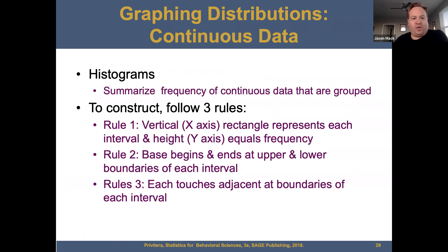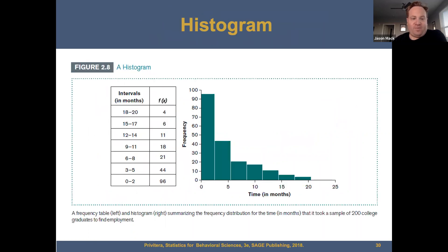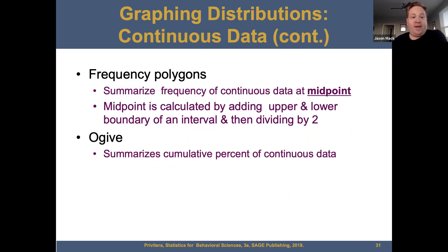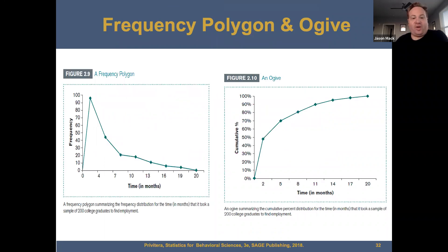We have histograms, which construct the frequency of continuous data that are grouped. To construct a histogram, follow three rules. Rule one: each vertical rectangle represents each interval, with height (y-axis) equal to the frequency. Rule two: the base begins and ends at the upper and lower boundaries of each interval. Rule three: each bar touches the adjacent boundaries of each interval. Frequency polygons summarize the frequency of continuous data at the midpoint — calculated by adding the upper and lower boundary of an interval, then dividing by two. You also have an OGIVE that summarizes the cumulative percent of continuous data.